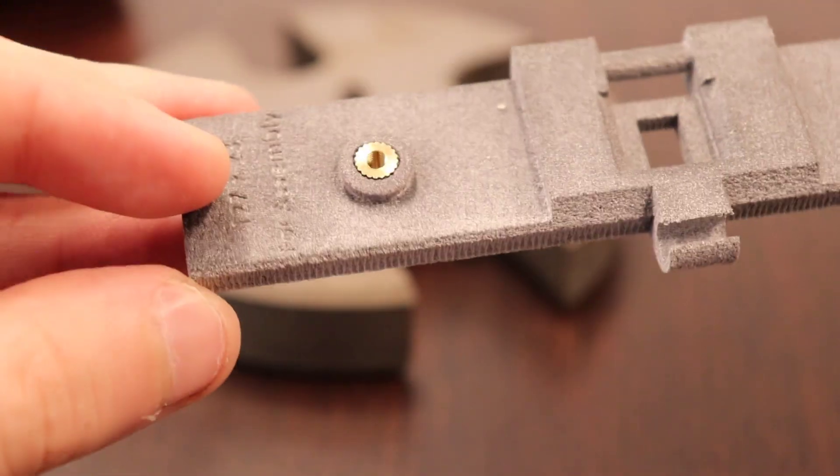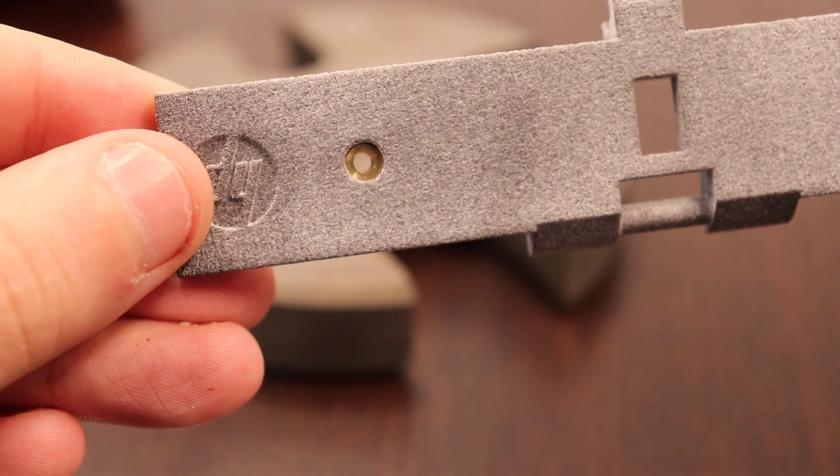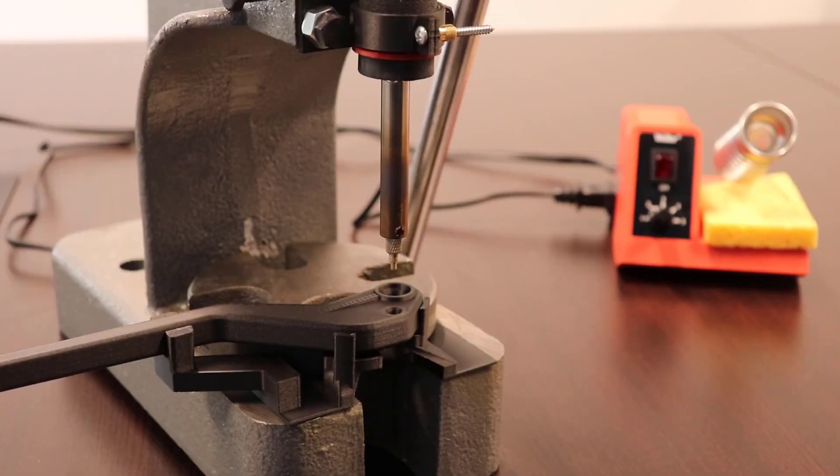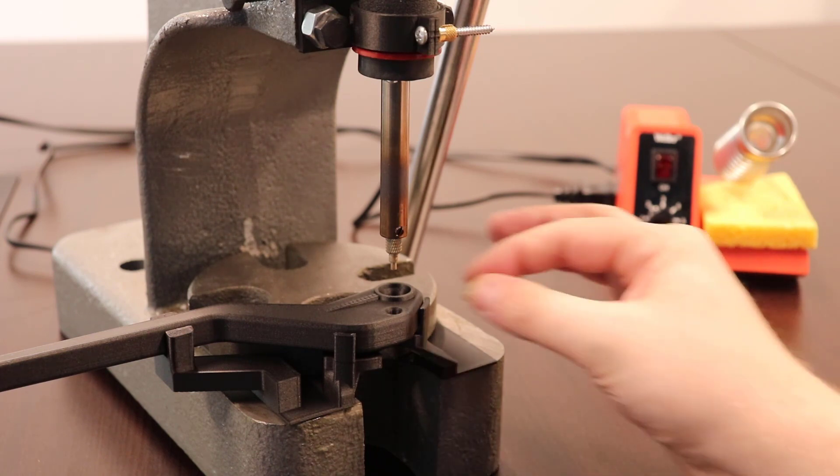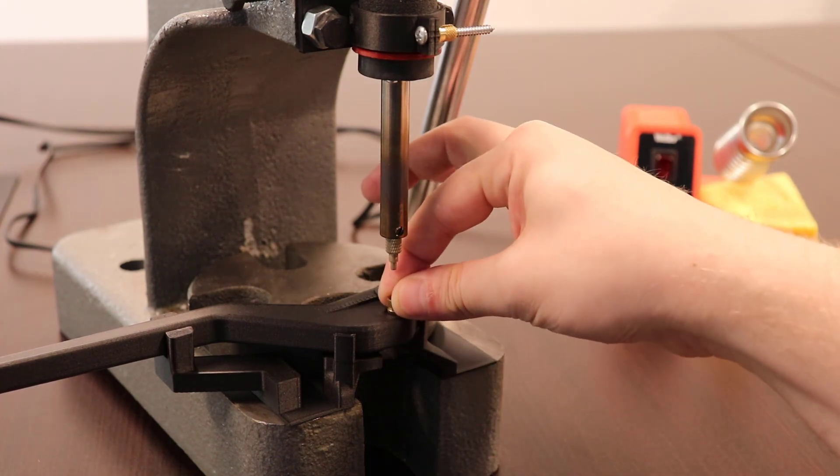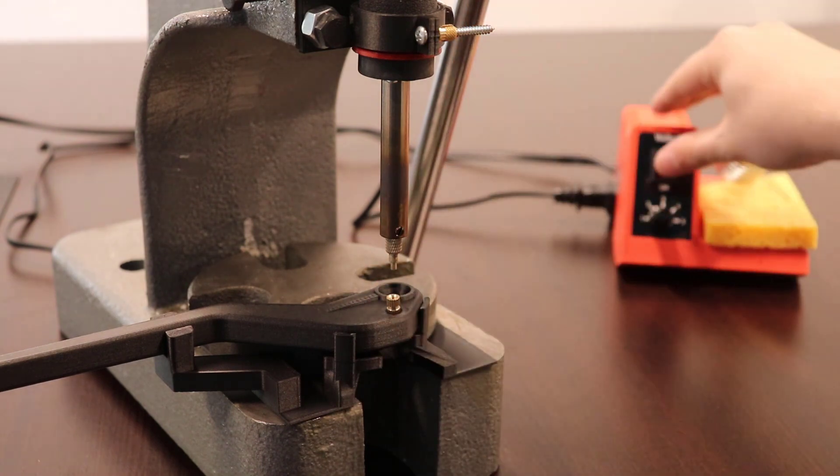Pressing inserts by hand is one method, but using a press tool can help ensure that even pressure and angle is applied to the insert. We'll install this next insert by using an arbor press that has an attachment for the soldering iron.